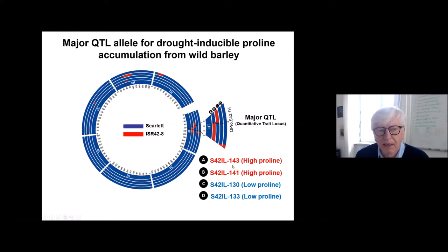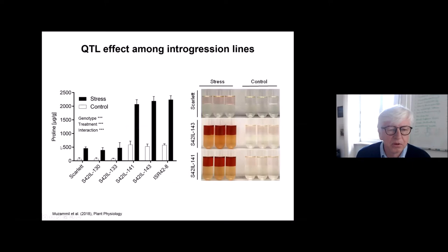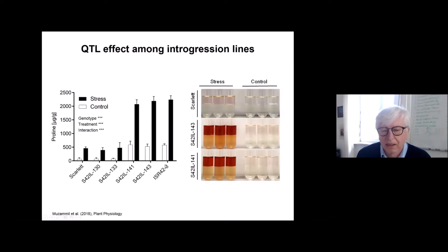Based on this observation, we thought it might be a good indication. Looking at proline levels under stress and control conditions: our cultivated type and two other types showed some stress-induced proline increase, but the two lines of interest showed a huge increase in proline — comparable to the level in our wild form. The images of these measurements are also shown.